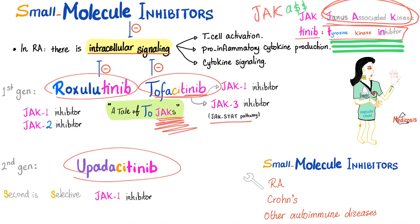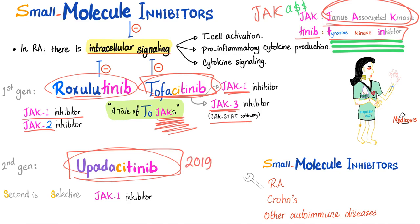Tofacitinib is anti-JAK1 and JAK3. Ruxolitinib is anti-JAK1 and JAK2. But the new generation, upadacitinib, which was just approved in 2019, is a second-generation agent and is selective — it's only selective against JAK1.